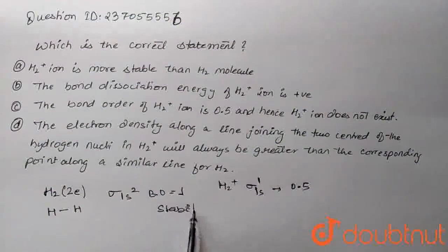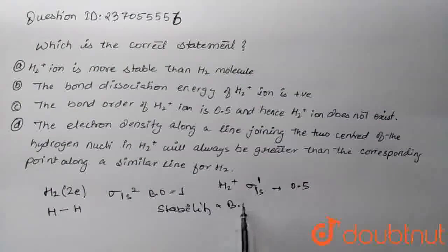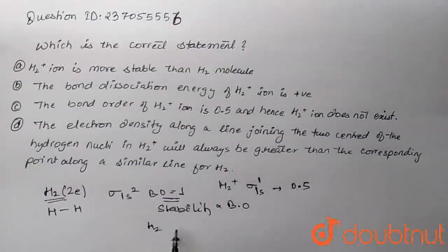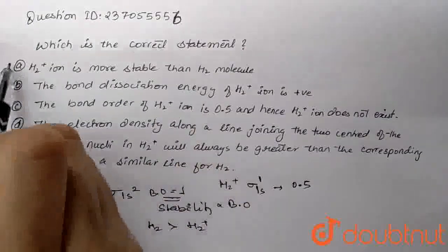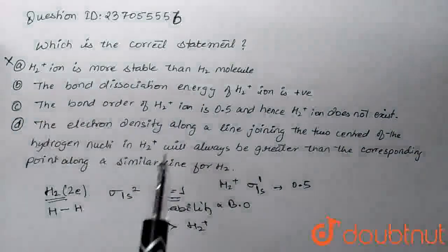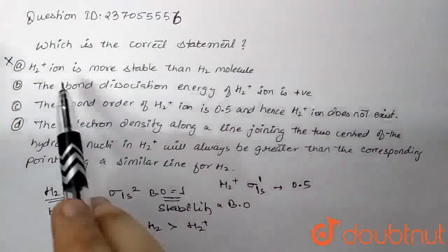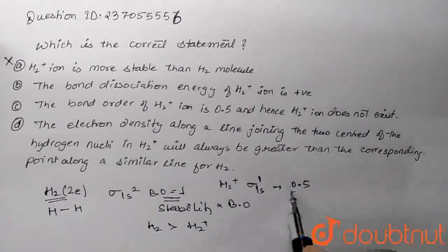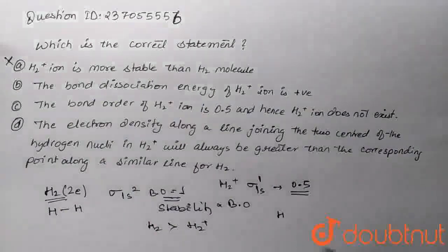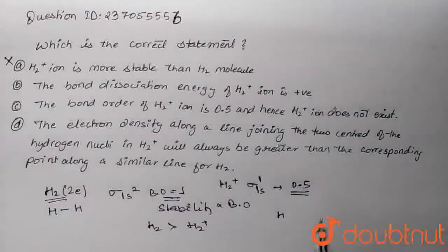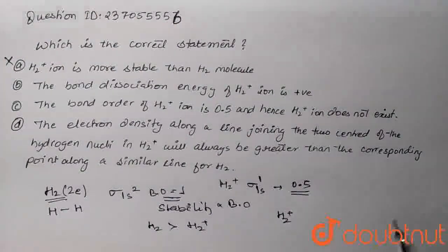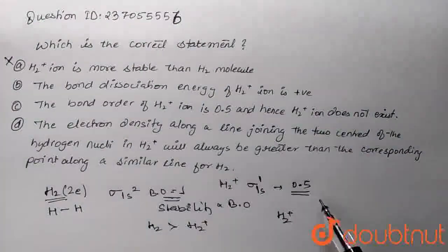The stability is directly proportional to bond order. So whose bond order is higher? H2 molecule's, right? So H2 molecule is more stable than H2 plus. So the first statement is wrong. H2 plus would be more stable than H2? No. Because its bond order is 0.5, so there is some interaction, there is some bond between them.